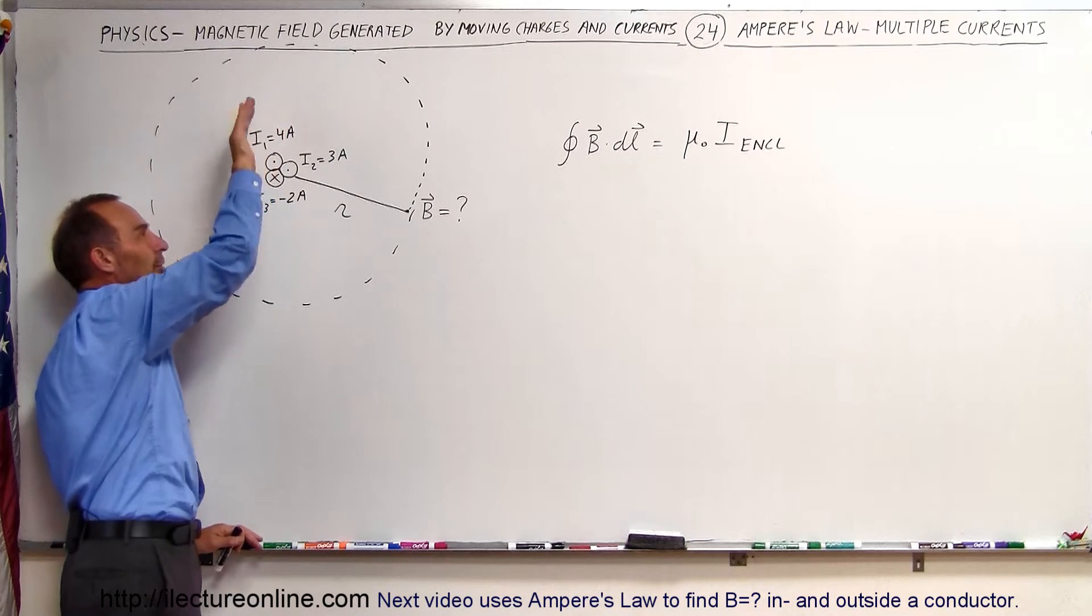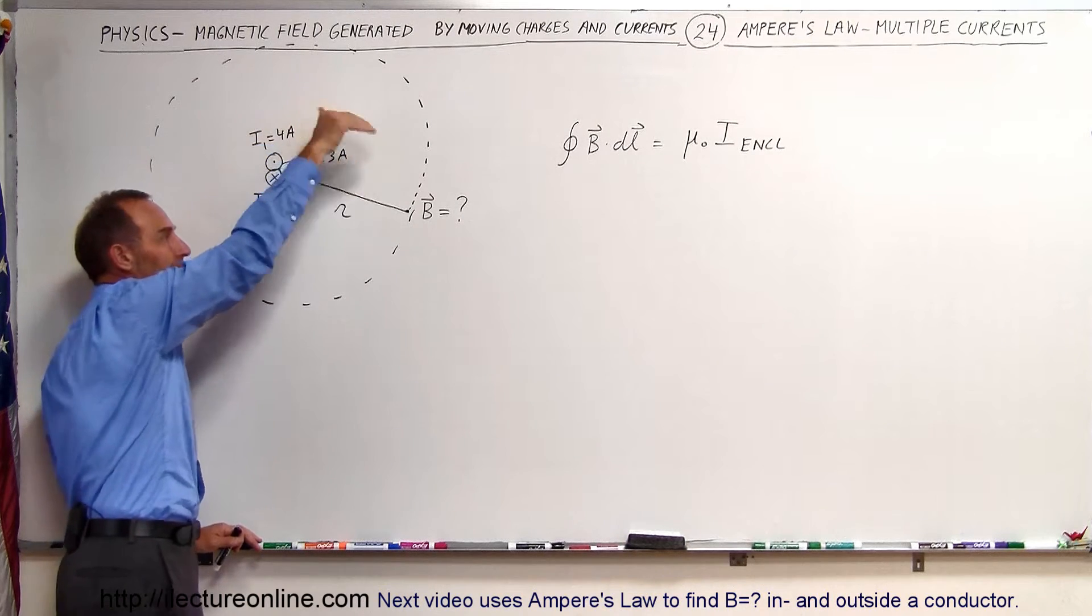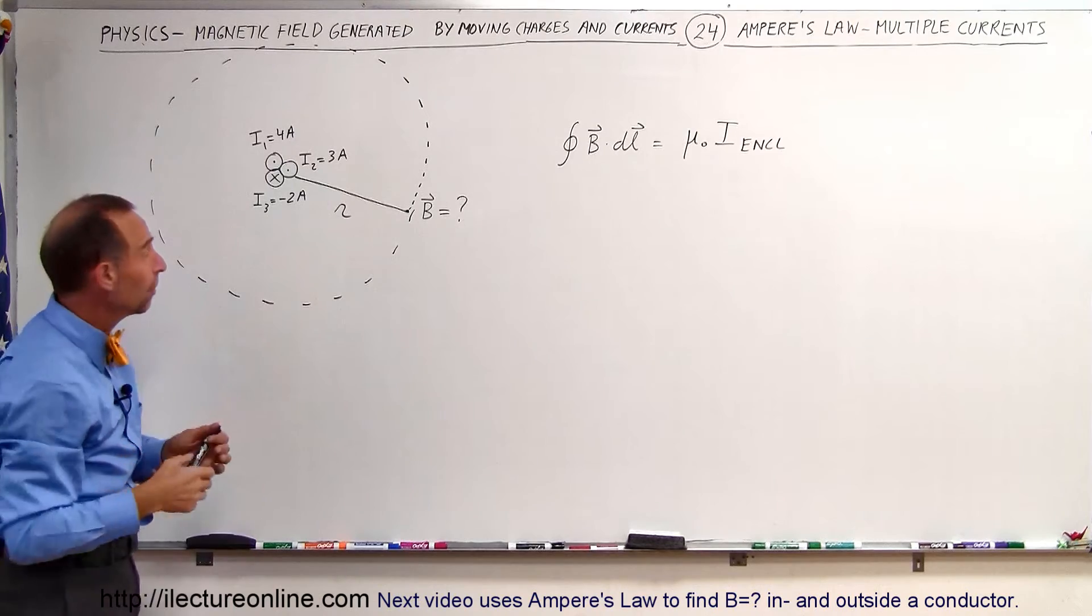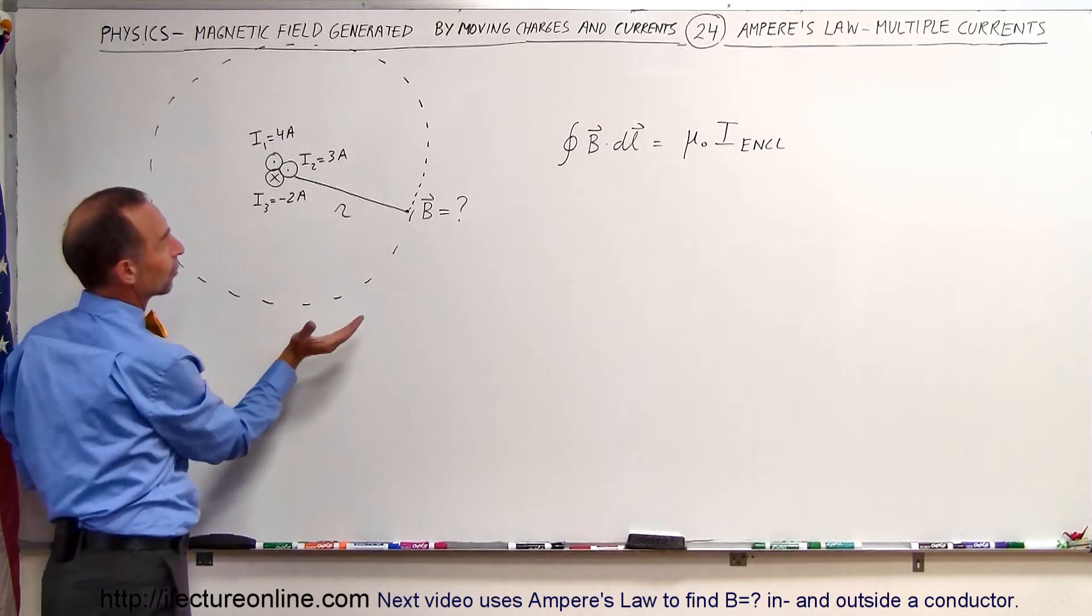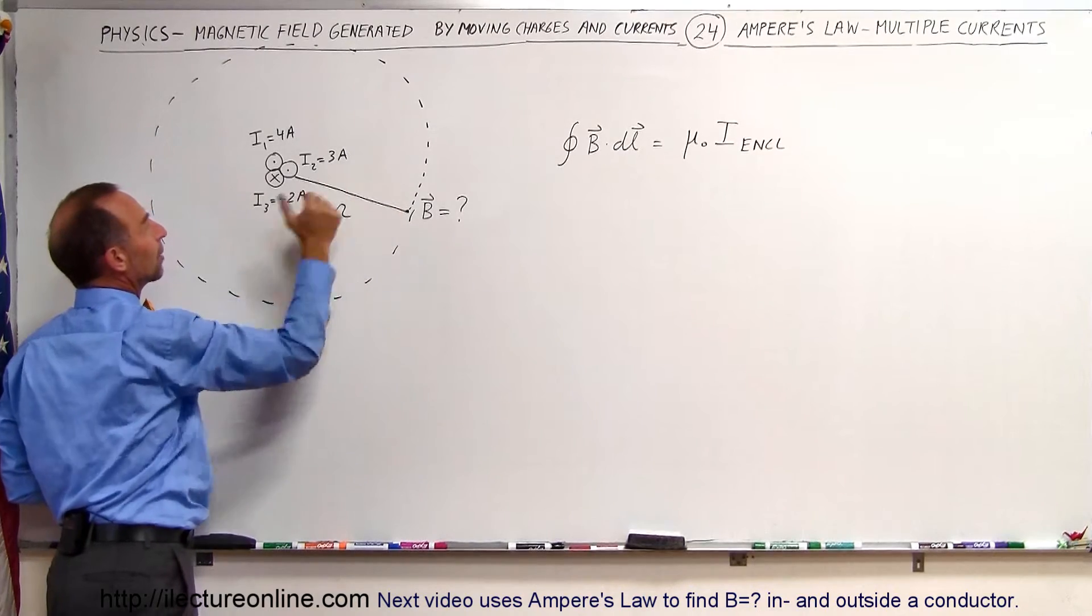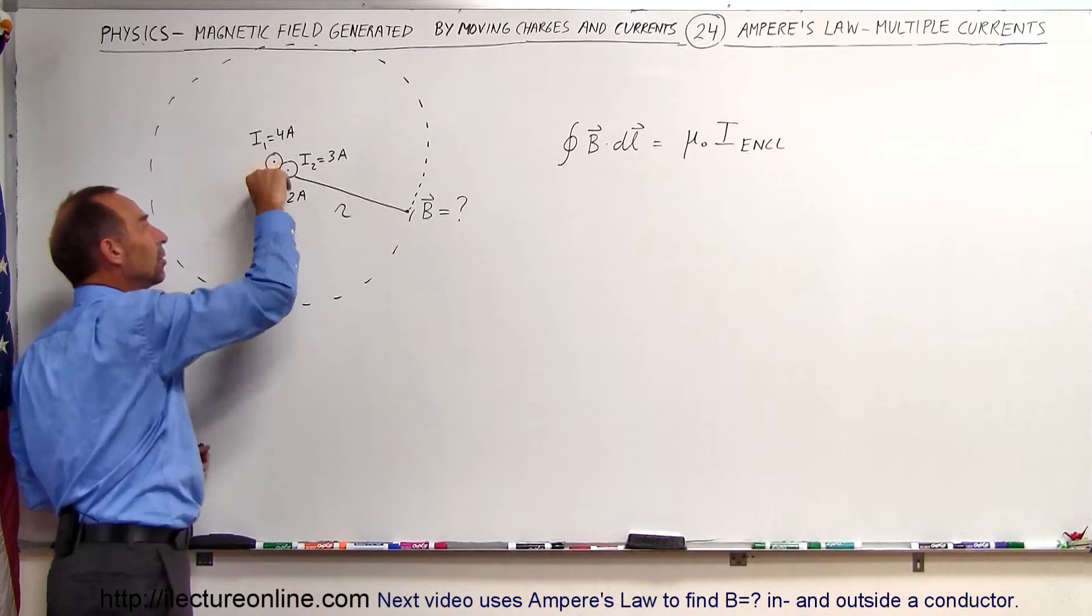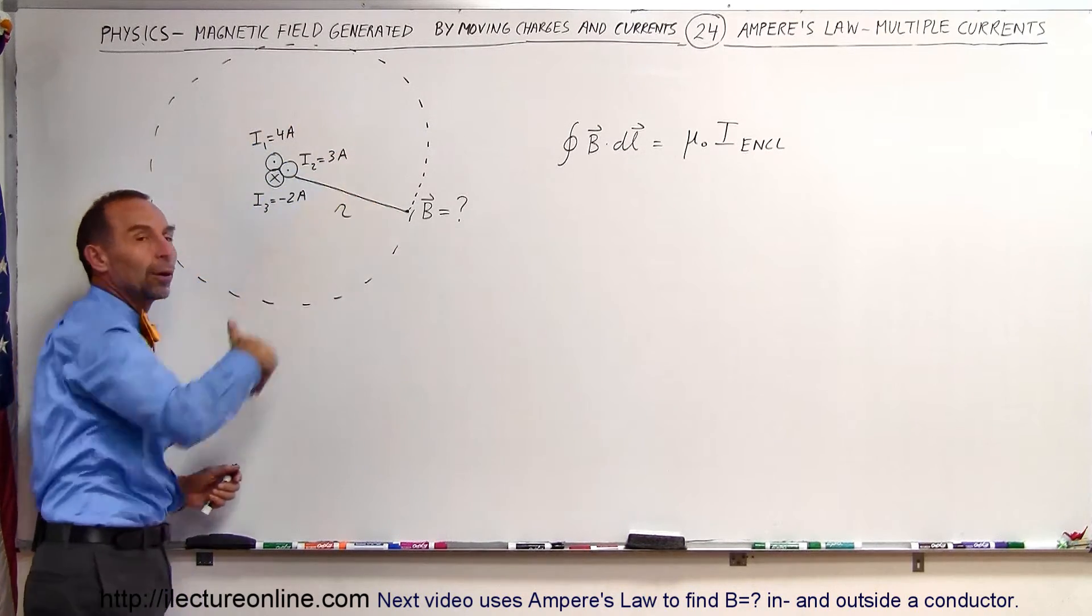And so it depends if there's more current coming out than current going in, then the net result is the magnetic field will be in that direction. If there's more current going into the board, then the magnetic field will be going in that direction.